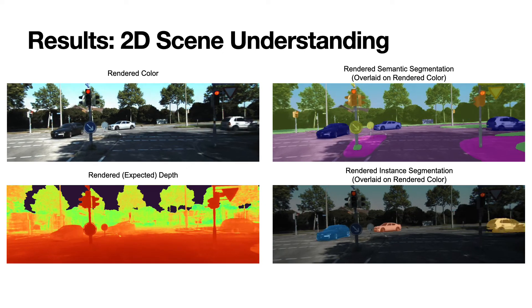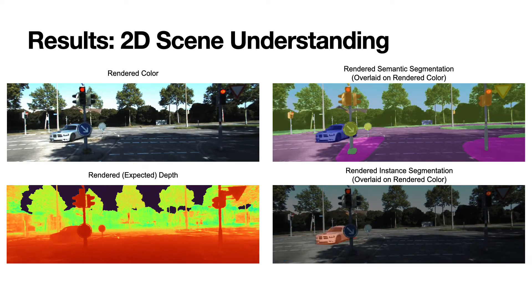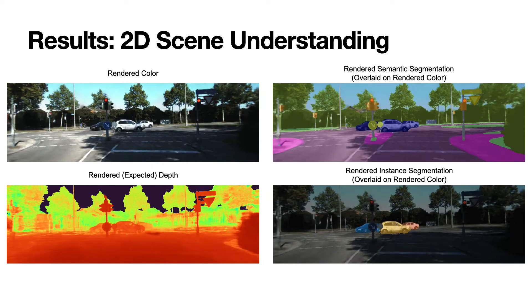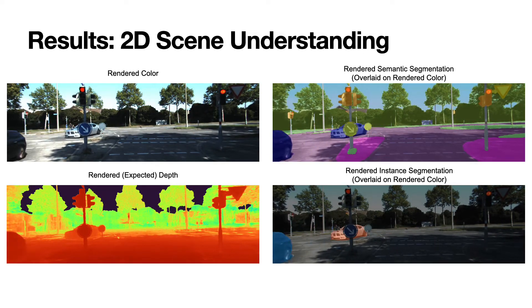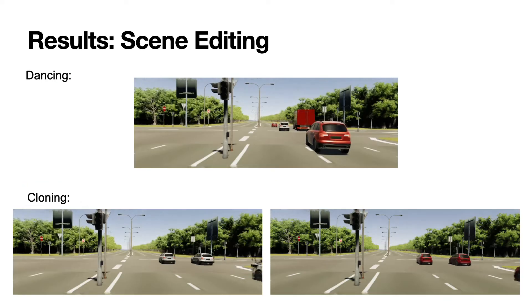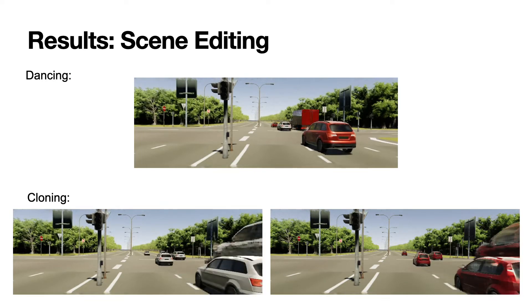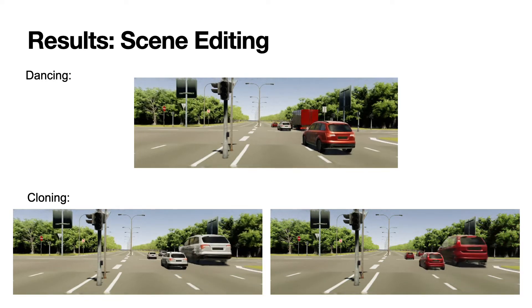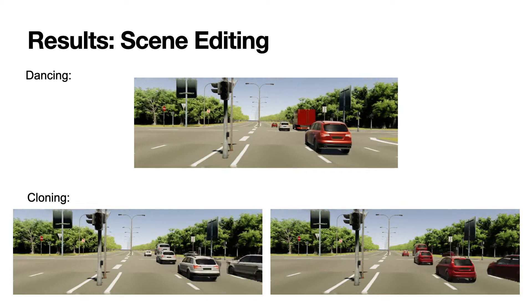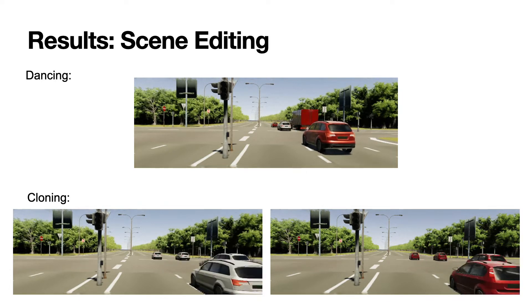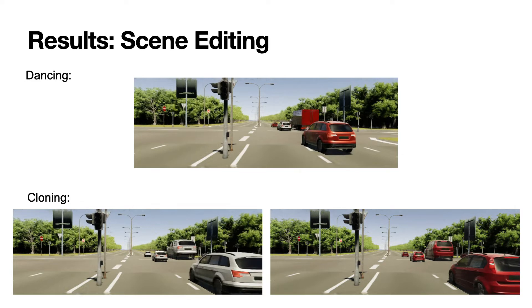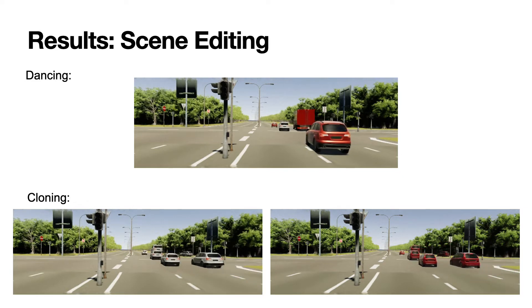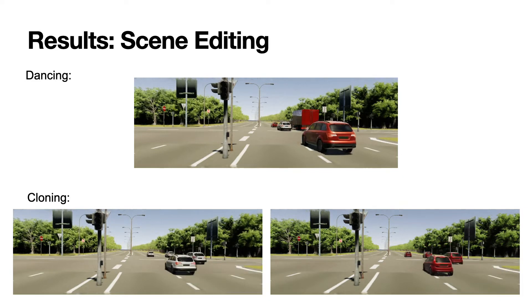Panoptic neural fields offer a unified representation that allows several 2D scene understanding tasks to be performed seamlessly by a simple forward rendering pass. Our model is also useful for applications like scene editing. In the top we show results where the object poses are being manipulated. In the bottom we show two edited scenes where all vehicles in the scene have been cloned to a single car by replicating its MLP parameters.